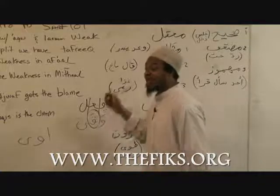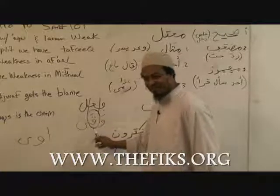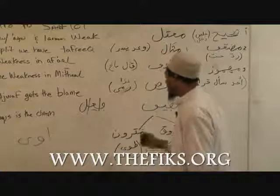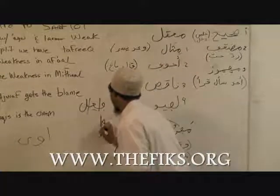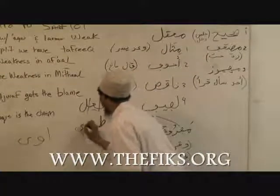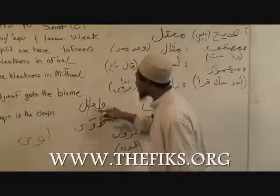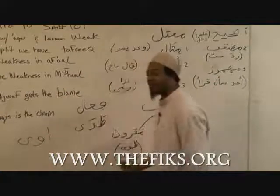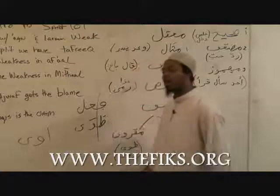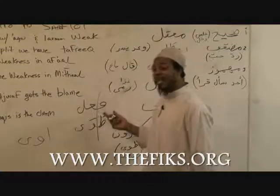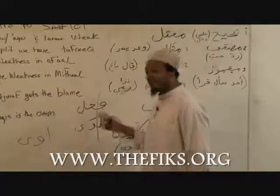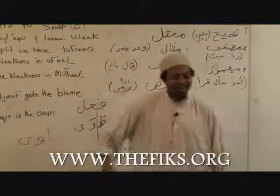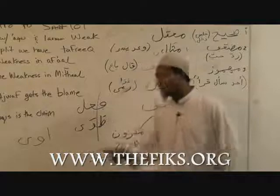So it's a fa'l al-mu'atel, lafif, mafruq. Now let's go to another one. If it has ta, wa, ya — ta, wa — then we notice that the a'in of the letter has a weak letter, and the laam of the letter has a weak letter, and the strong letter is ta. This would be fa'l al-mu'atel, a weak verb — lafif, because it has two weak letters in it. And it's maqruun because they're qarana — they're right next to each other connecting. Does that make sense? Yes, sir.